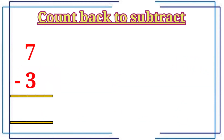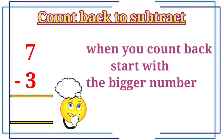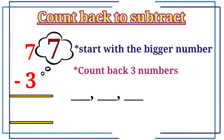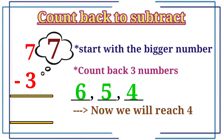Now we will see another way to subtract. To find the answer, seven minus three. Remember kids, when you count back, you start with the bigger number. Which one is the bigger number? Seven. Very good. Start with the bigger number, seven, and count back three numbers: six, five, four. Now we will reach number four. Therefore the answer is four.